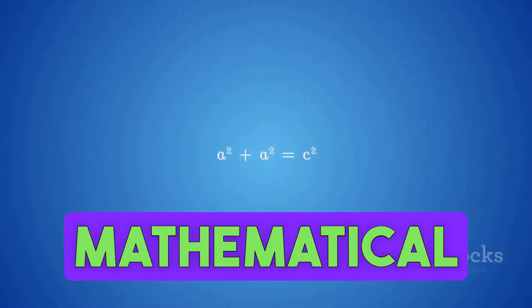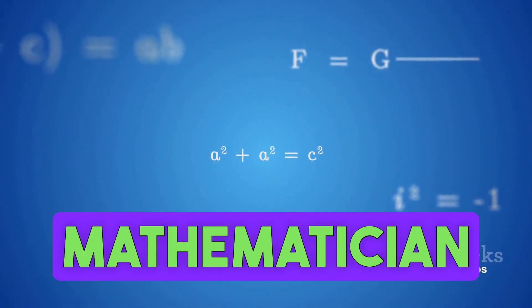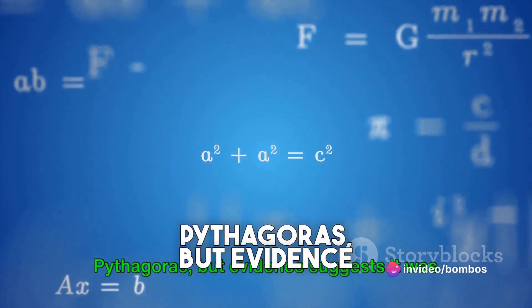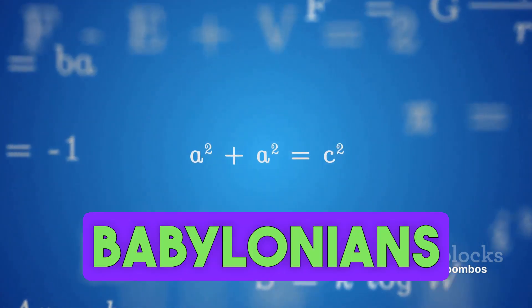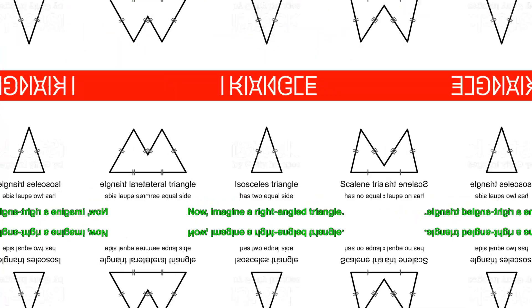It's an ancient mathematical principle credited to the Greek mathematician Pythagoras, but evidence suggests it was known to the Babylonians and Egyptians long before his time.